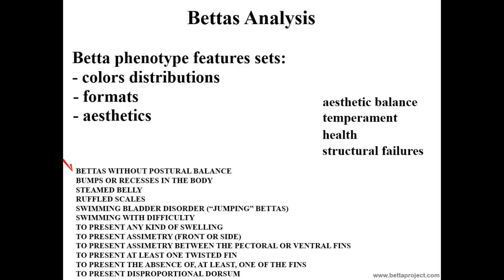Structural failures include: presenting the caudal peduncle fallen relative to an imaginary horizontal line through the mouth to the middle of the caudal fin, as if a weight forced down the caudal peduncle; presenting bumps or recesses in the body; presenting a swollen belly in males or females without oocytes; presenting ruffled scales; having swimming bladder disorder — where the longitudinal line from mouth to caudal fin is not horizontal but bent and hanging down to the caudal peduncle side, resembling a B, as if the BETA was always looking at the surface preparing to jump — the so-called jumping BETAs — or swimming with difficulty, shaking itself.